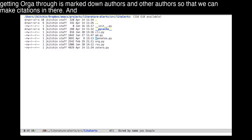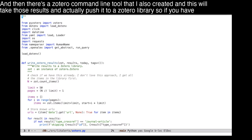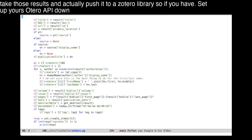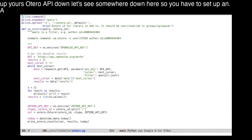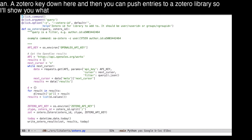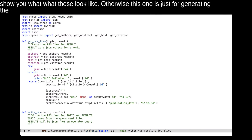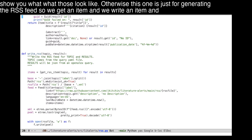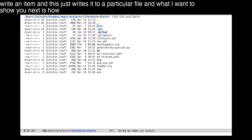There's also a Zotero command line tool I created, which takes those results and actually pushes them to a Zotero library. You have to set up a Zotero API key, and then you can push entries to a Zotero library. There's also a separate module just for generating the RSS feed — it gets an item and writes it to a particular file.